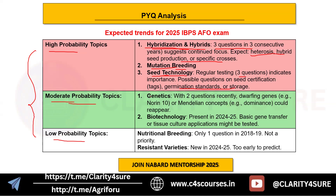Moving to moderate probability topics, there are two: genetics and biotechnology. In genetics, with two questions recently on dwarfing genes and Mendelian concepts like dominance, it could reappear. For biotechnology, since one question was asked in 2024, basic gene transfer or tissue culture applications might be tested.